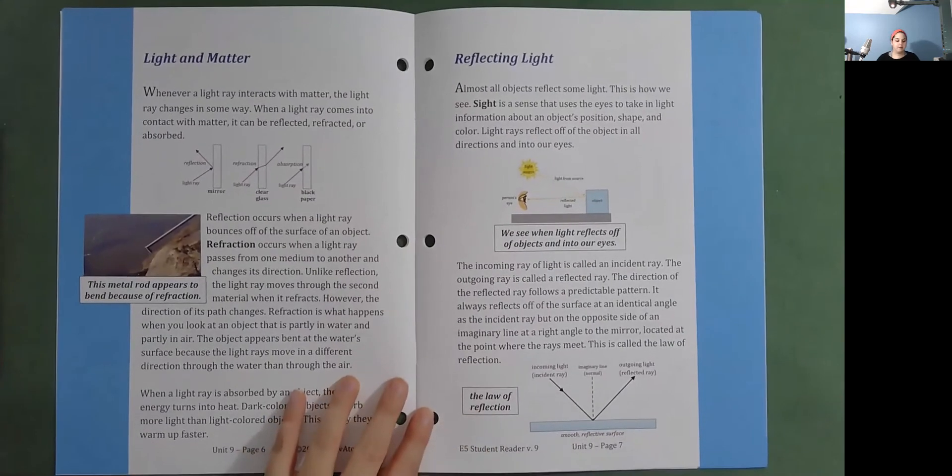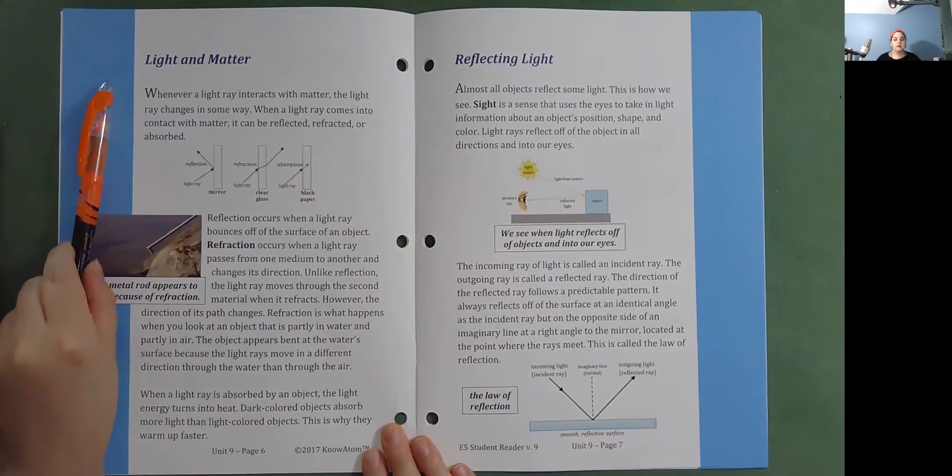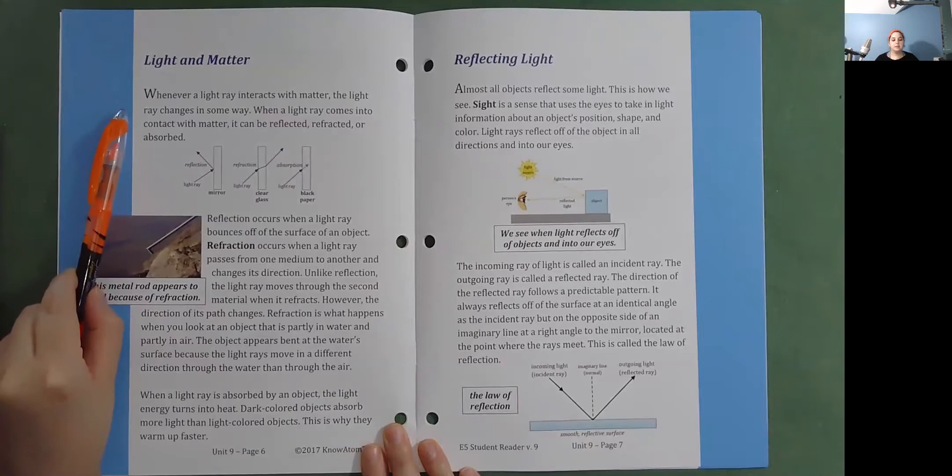Light and matter. Whenever a light ray interacts with matter, the light ray changes in some way. When a light ray comes into contact with matter, it can be reflected, refracted, or absorbed.